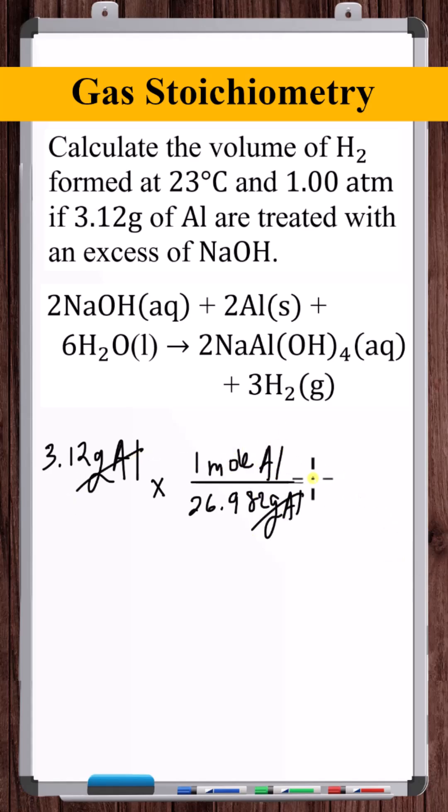Now, using stoichiometric equivalencies, for every two moles of aluminum consumed, three moles of H2 are produced. So there we go. Now we're in moles of H2. Multiplying all this out.